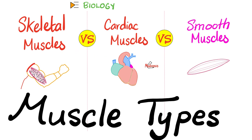Today we'll compare skeletal muscles, cardiac muscles, and smooth muscles — voluntary, involuntary, involuntary — somatic nervous system, autonomic nervous system, autonomic nervous system.